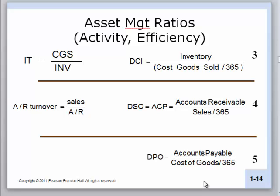DCI is the number of days on average that inventory sits on the shelf. Obviously, you want less inventory on the shelf, but you have to make sure you have enough to make sales. DSO is the average number of days it takes for our customers to pay us what they owe — accounts receivable is a bill owed to us, and we would like this to be smaller rather than larger. DPO, accounts payable outstanding, talks about how long it takes for us to pay our bills. We don't necessarily want this to be very short, but we don't want it to be so long that it hurts our credit rating.